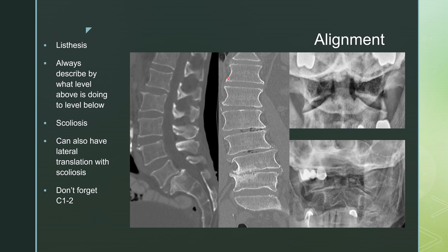Scoliosis, by convention, we describe by which way the curve is pointing towards, or which way the convexity is. So this would be dextroscoliosis if it's pointing to the right; it would be levoscoliosis if it were pointing to the left. When you have scoliosis, you can also describe a lateral translation. Here you would say there is lateral translation of L3 over L4 because the lateral vertebral bodies do not line up.